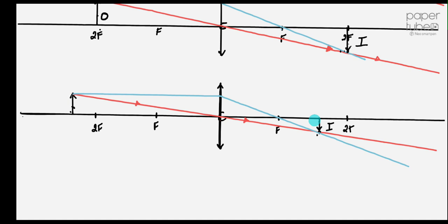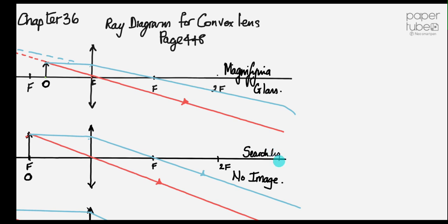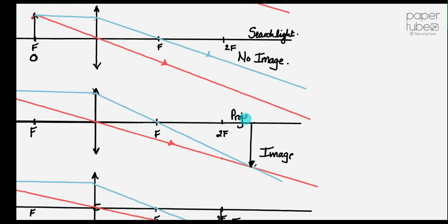So let's write all these things down — what they are. Let's go up to the top. That's a magnifying glass. This one — searchlight. Here is your cinema projector, so we'll just put in projector. The next time you're at the cinema — there's your projector. And this one is a camera.